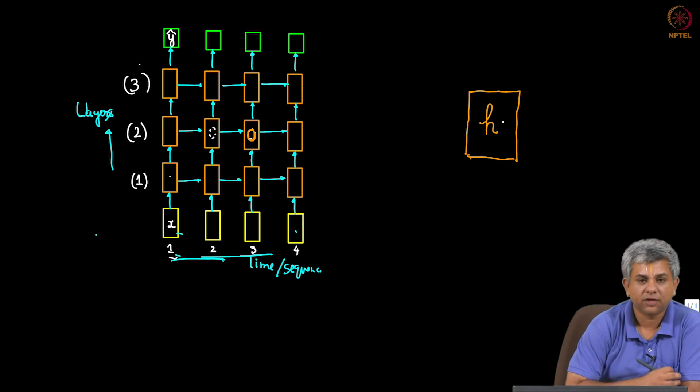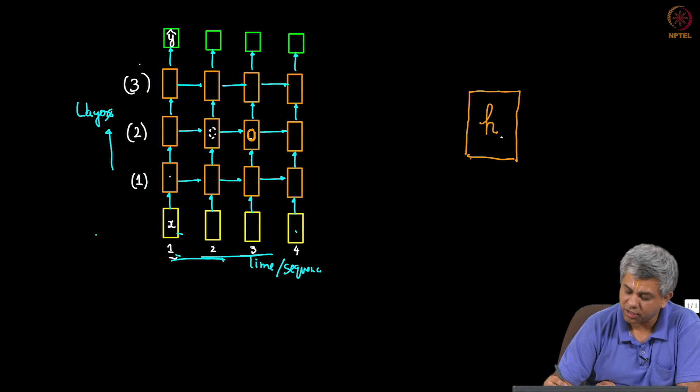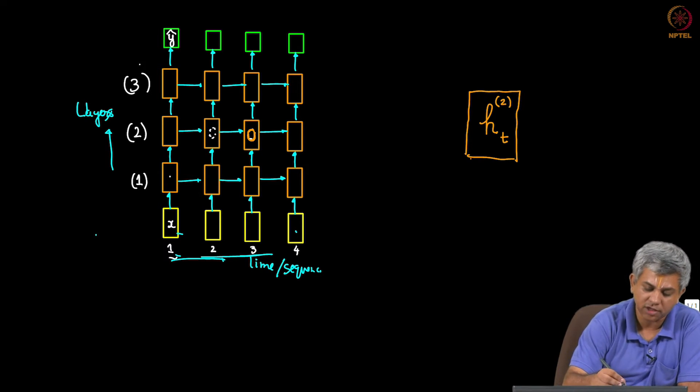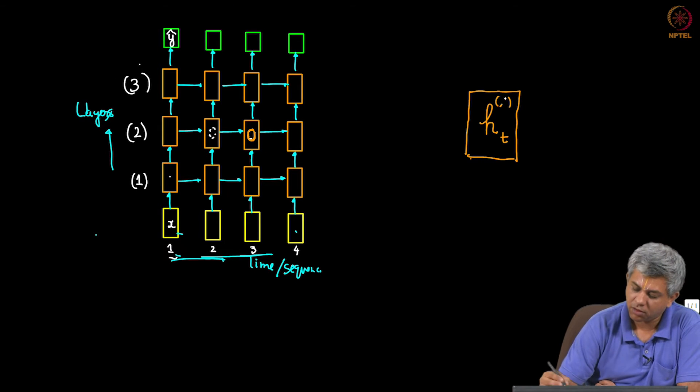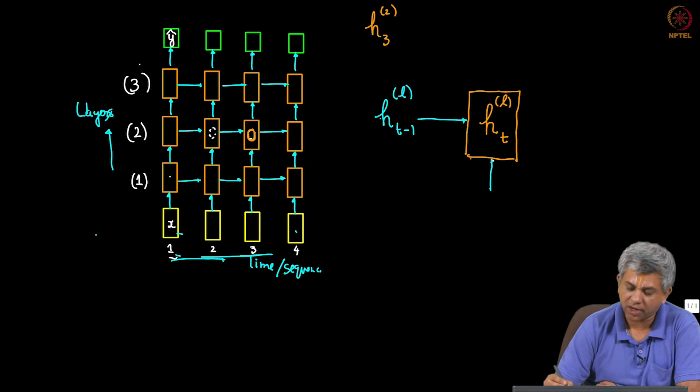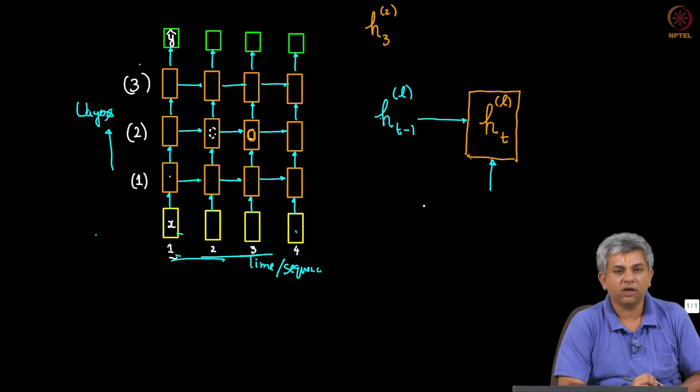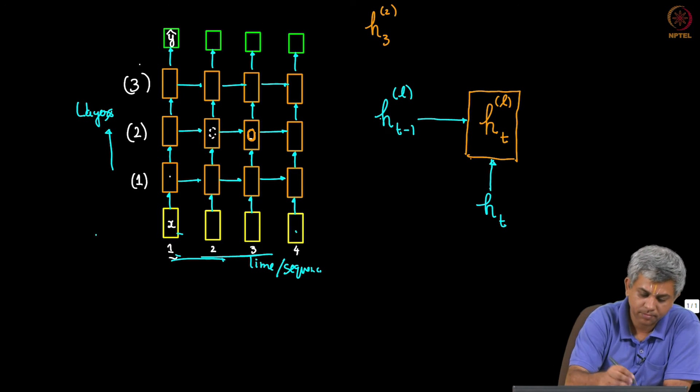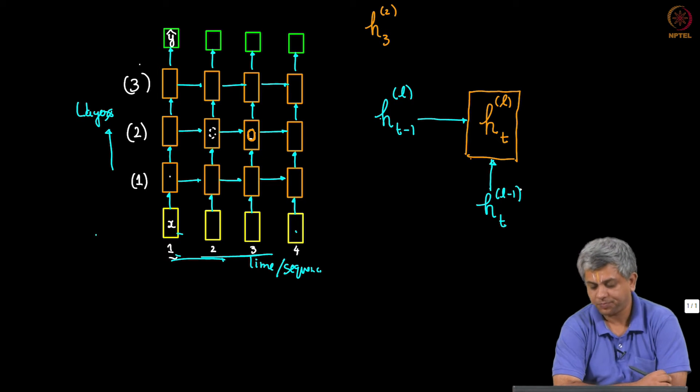So this is H, this hidden unit. This is time sequence, let us denote time sequence as T and by superscript, let us give the level. This is 2 or in general this is going to be L. So in this specific case, this element would be H_3^2. Now what comes in is the previous one. Now as you can see time decreases here, so this is H_{T-1} at the same level and what comes in from below is instead of X which is what used to happen in a normal single hidden layer RNN. In this case in a deep RNN what is below is actually H itself T, sorry, T L minus 1.